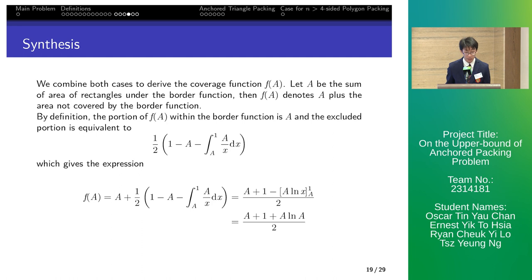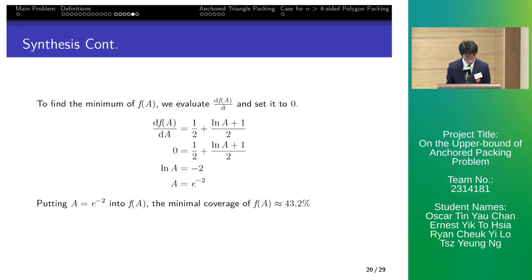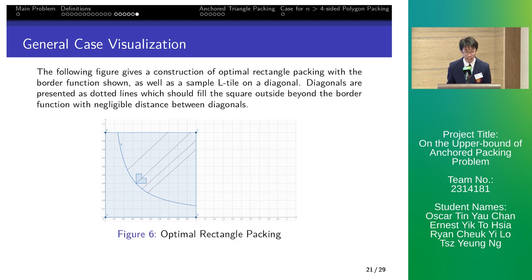Let a be the polygon area within the border function. For the overall coverage in a square, we derive the coverage function as the sum of a and the area up out of the border function by general case. To minimize f a, we solve f' a equals 0. It shows that a equals d to the negative 2 gives the smallest coverage of 43.2% in square. This is a visualization of the optimal rectangle packing. An L tile on the diagonal is shown and the dotted lines represent diagonals viewed by many small L tiles.